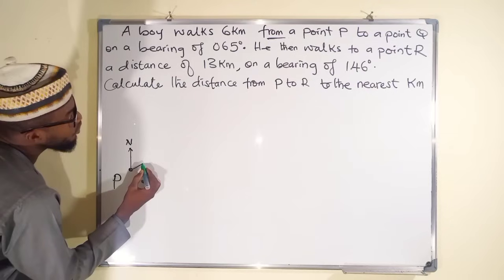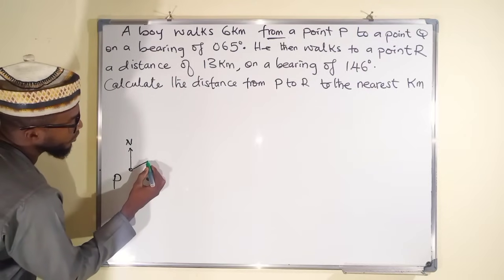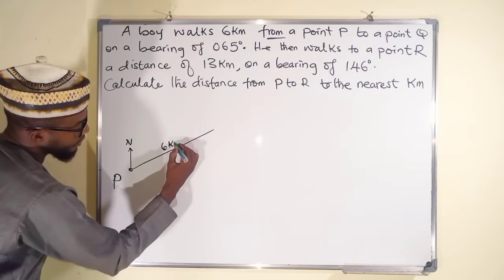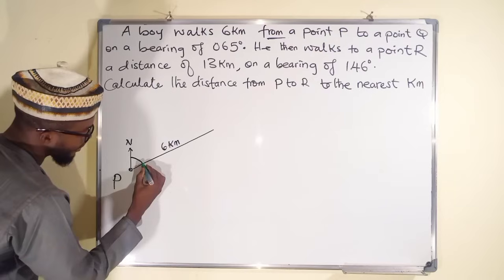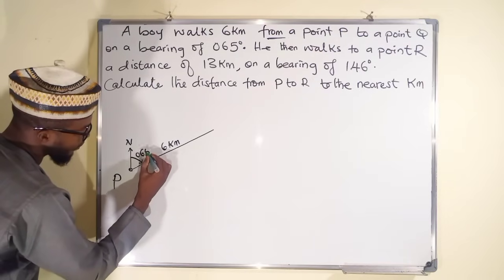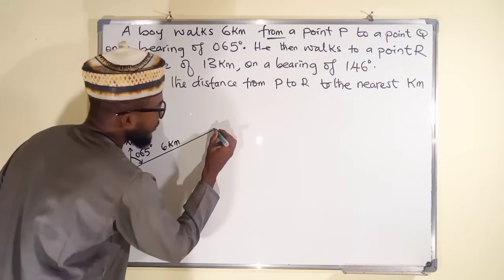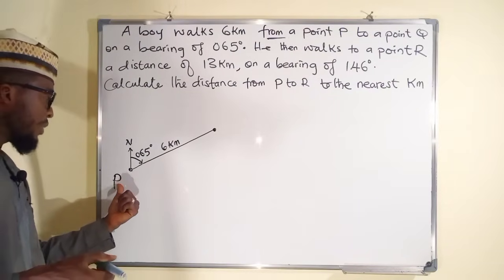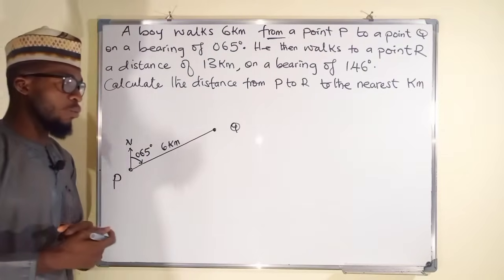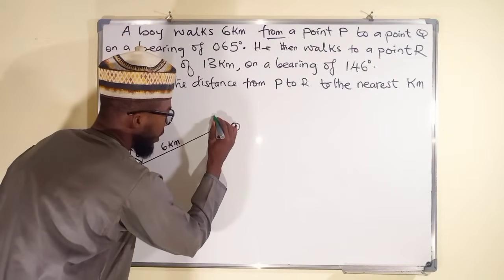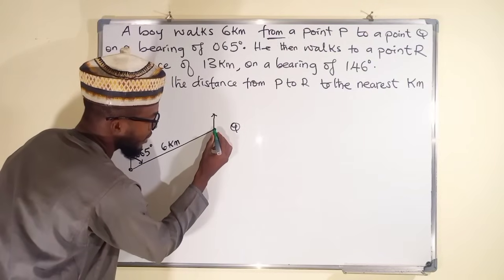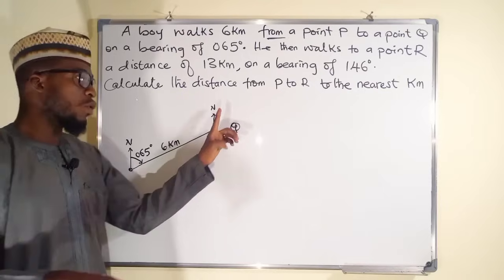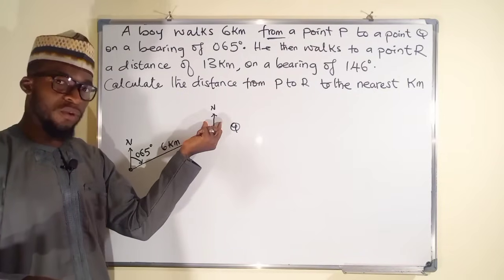From the north at P, we construct an angle of 65 degrees. Using this line going to Q, we mark six kilometers — this is a freehand sketch. This is a bearing of 065 degrees and this point should be point Q, because the boy was moving from P to Q. Point Q must also have a north pole. You can extend it to the south, but the north pole is compulsory.